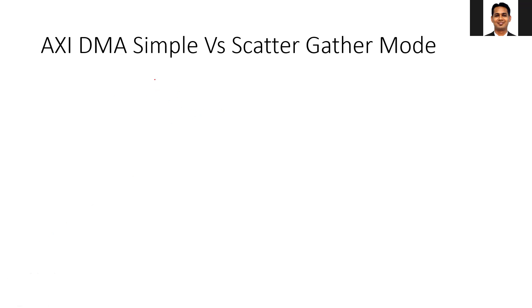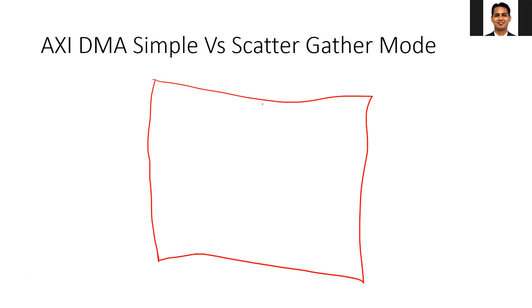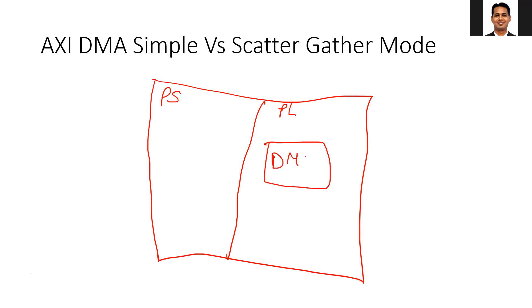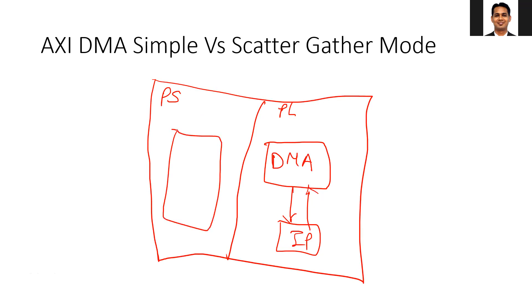In the simple mode of the DMA, suppose this is your Zynq SOC IP. You have the PS part and the PL part, and we are using the AXI DMA, which converts the memory map to the stream interface. This is our IP with the stream interface, where we receive the data and send the processed data back. This is our memory — it can be internal or external. The DMA receives the data from memory and writes the data back. We call this memory-map to stream (MM2S) and stream to memory-map (S2MM).